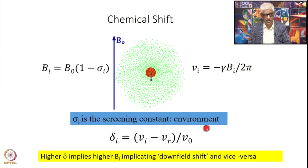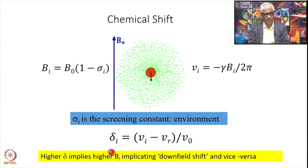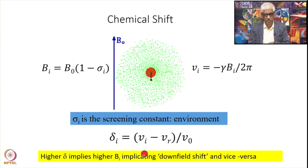Dividing by nu_0 gives a very small number, so we multiply by 10 to the power 6, and that is called PPM — delta_I is expressed in parts per million. Higher delta_I means higher B_I, implicating a downfield shift with less screening and higher frequency of absorption. Higher sigma_I, lower delta_I implies greater shielding, meaning an upfield shift, and vice versa.